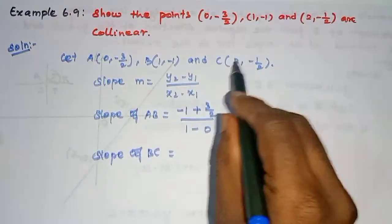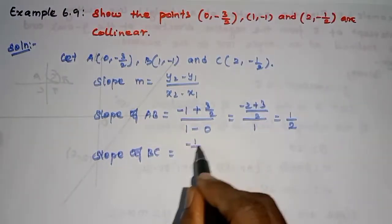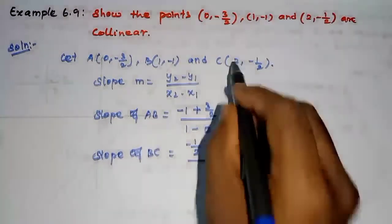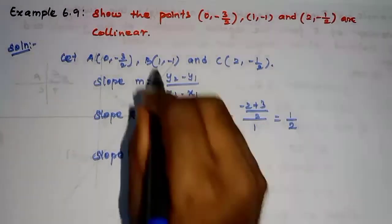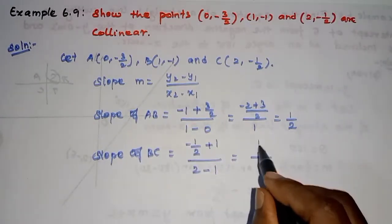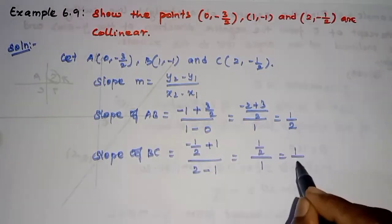Minus 1 by 2, minus of minus 1, I will choose plus 1. Divide by x2 minus x1 is 1. Denominator is 1. This is 1, this is half. So, subtract 1 by 2. Finally, we get 1 by 2.